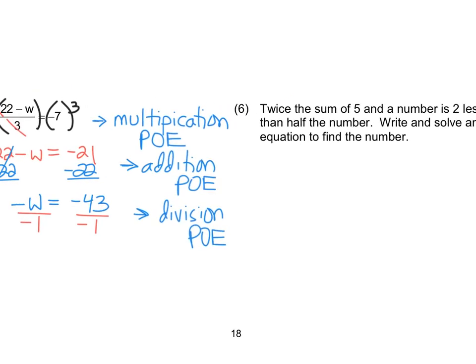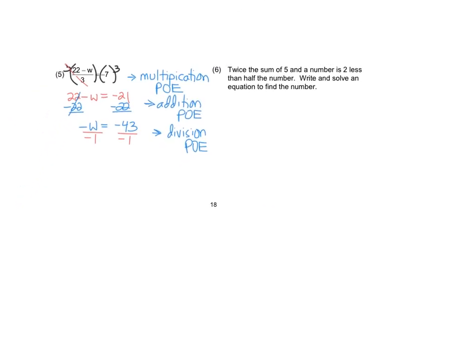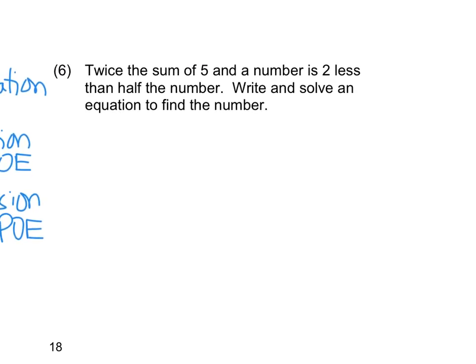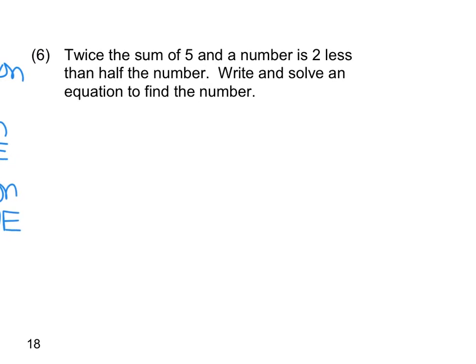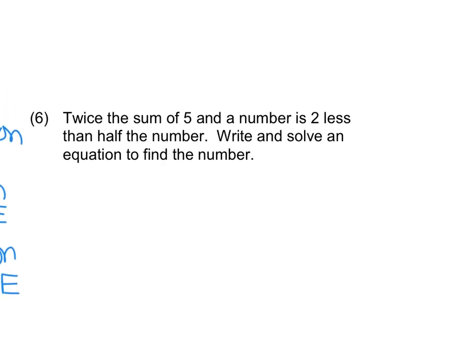All right, so then we had a question about number six. Twice the sum of five and a number is two less than half the number. Write and solve an equation to find the number. All right, very important. You've got to define your variables. In this case, it's only a single variable. But down the line, we'll have multiple variables, and we want to get in the habit of defining them. On the quiz. What's that? Is that let statement? That's let statement. You don't have to actually write let. Just somewhere in your solution, let me know what X represents. All right, so we're saying X is the number, right? You can go with that. Whatever you want.